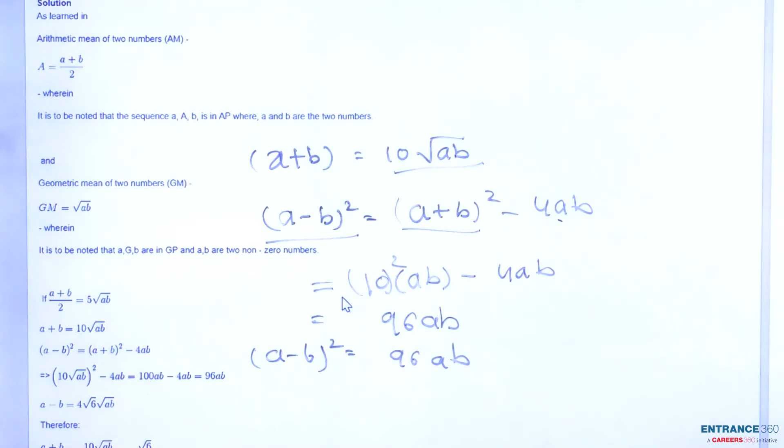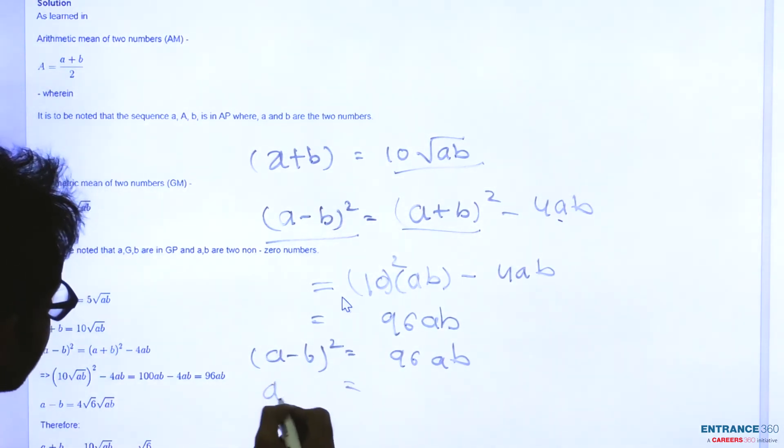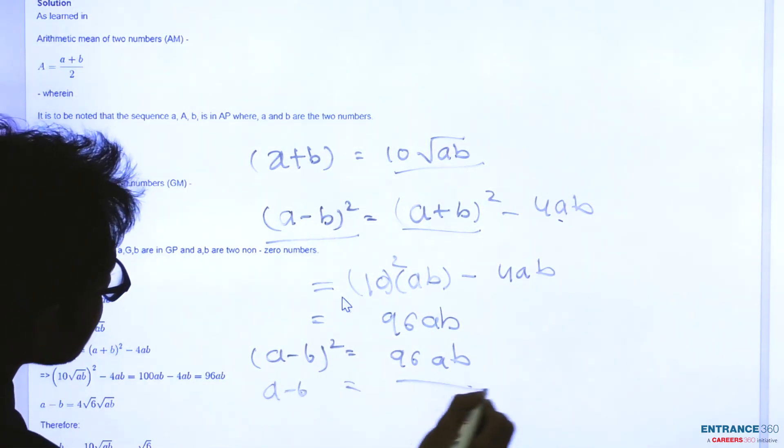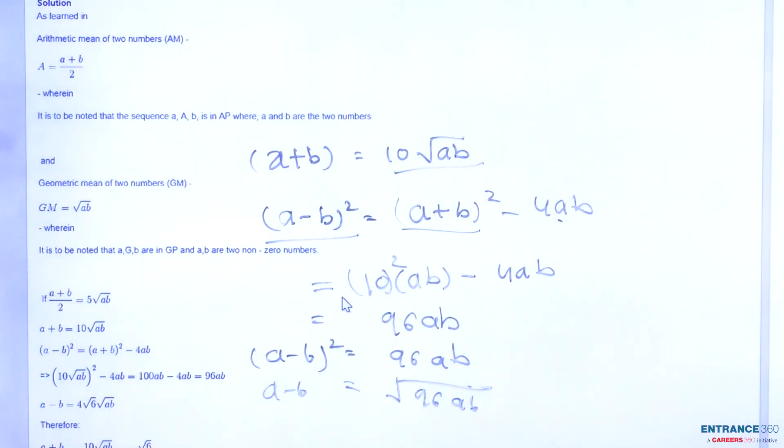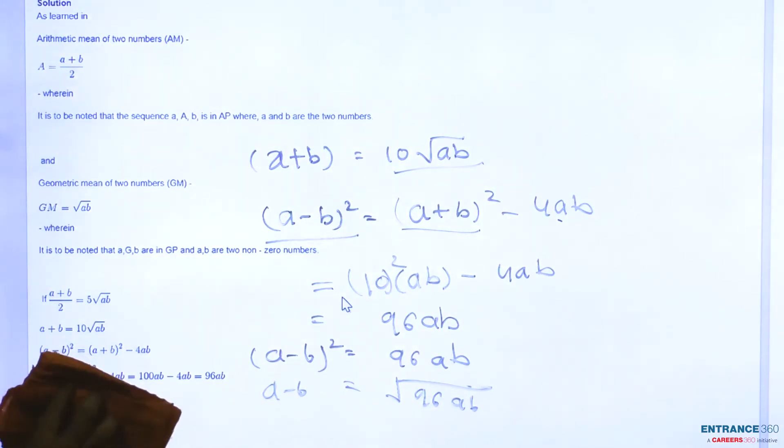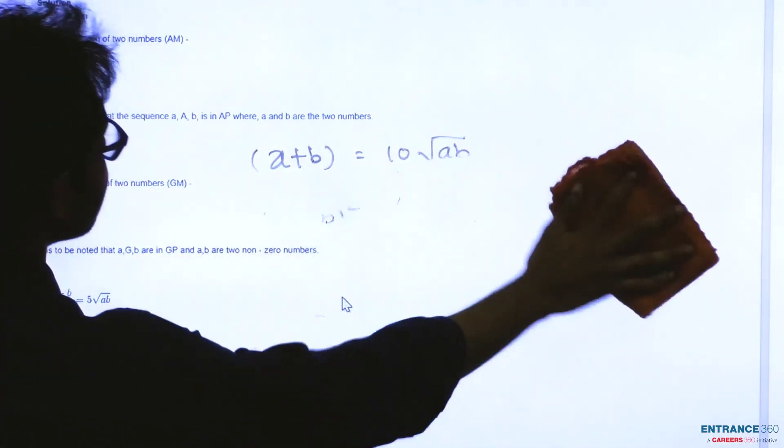And we know the value of A+B. So A-B = √(96AB). So we get two values A+B and A-B. Just divide these values and you will get your answer.